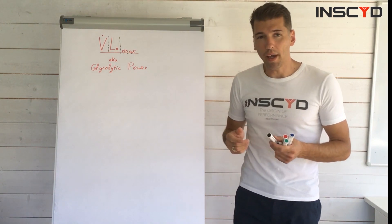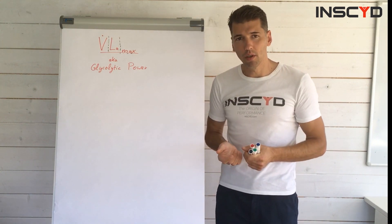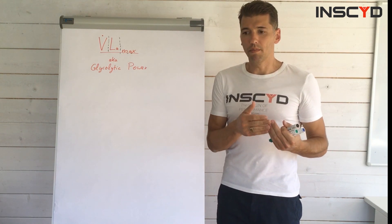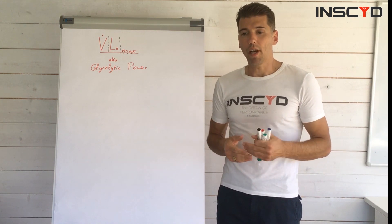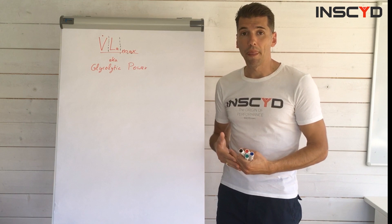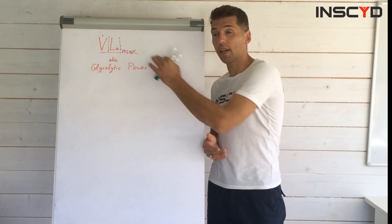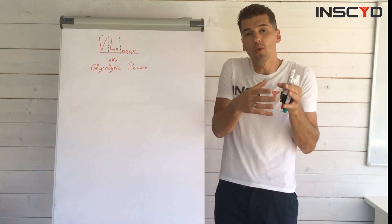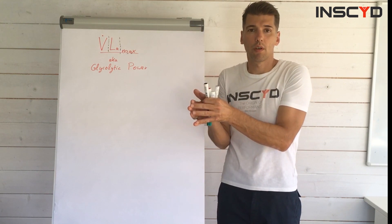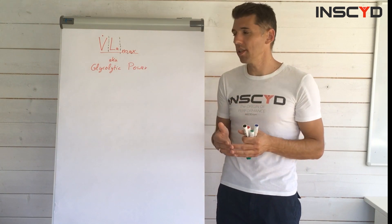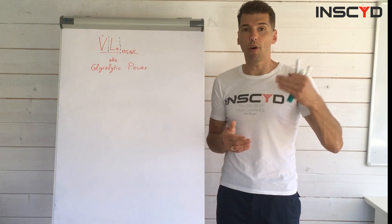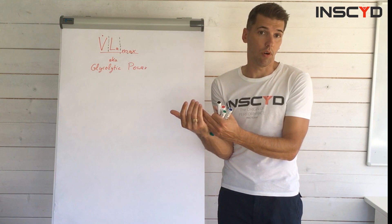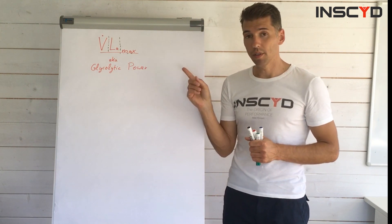So why is the maximum flux rate of lactate glycolytic power? In your glycolytic, or more roughly anaerobic metabolism, every time you produce power or energy, you're breaking down glucose and you produce lactate, and the rate of lactate formation is absolutely proportional to the rate of energy production. If you have seen our last video about VO2max, the rate of oxygen uptake is proportional to the power output or running speed, depending on your running economy.